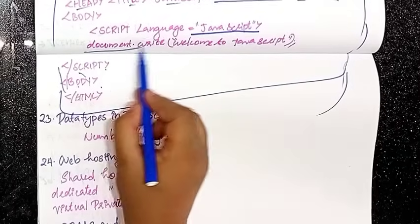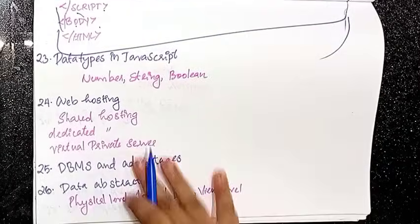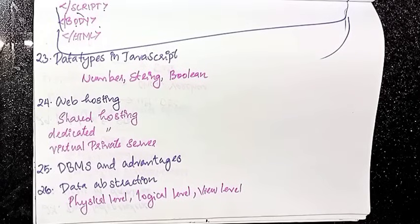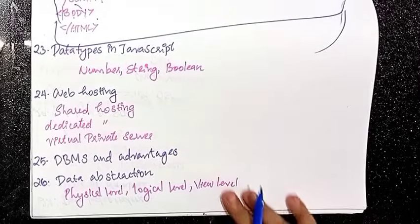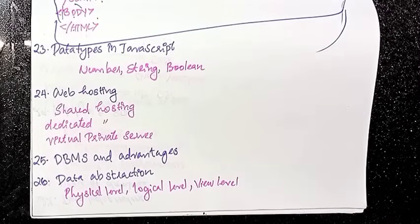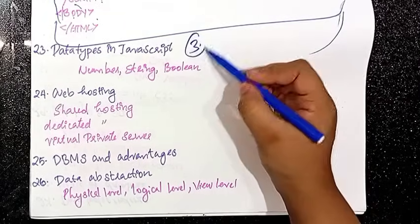Data types in JavaScript: in JavaScript there are three data types — number, string, and boolean.